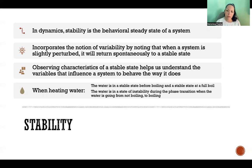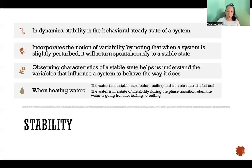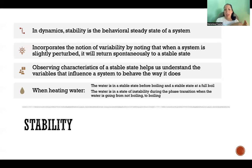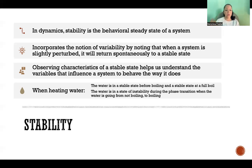Observing characteristics of a stable state helps us understand the variables that influence a system to behave the way it does. When we're heating water, it helps us understand the stable state that occurs before and after we reach boiling point. The water is in a stable state when the temperature is increasing and it's not boiling yet, and it's in a stable state when it's at a full boil. We're in an unstable state during the transition in between — that's the phase transition.